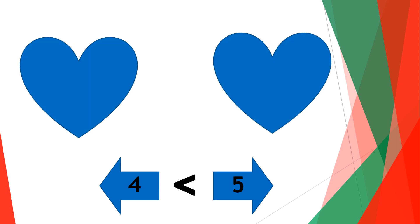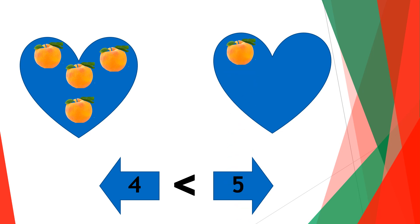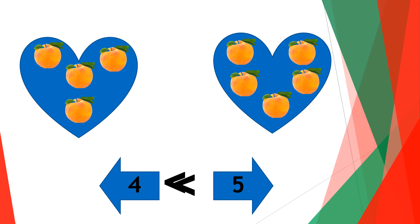Put four peaches on one side and five peaches on the other side — one, two, three, four and one, two, three, four, five — this means four peaches is less than five peaches, and this clearly indicates that four is less than five.